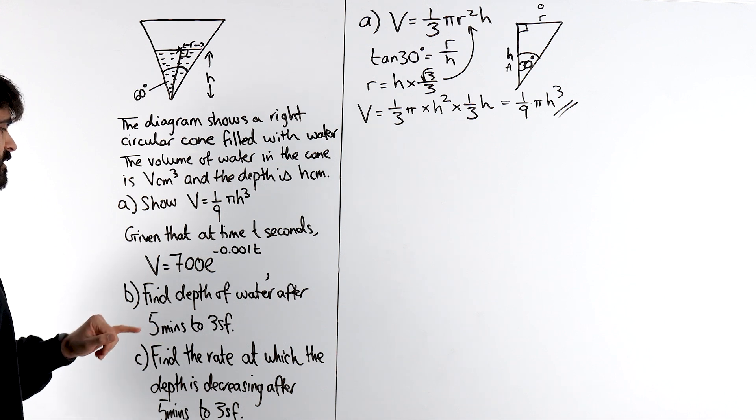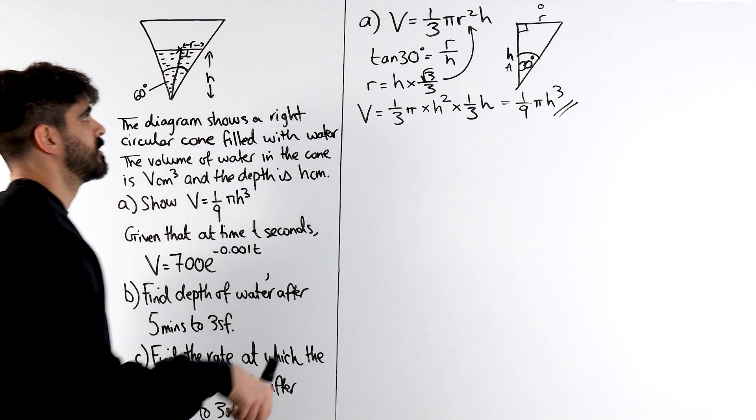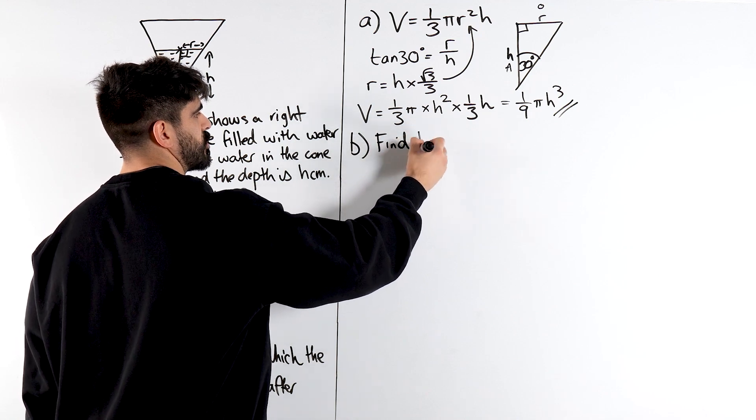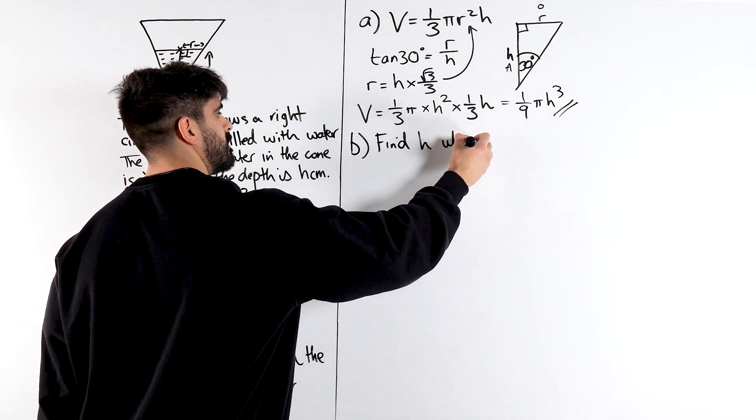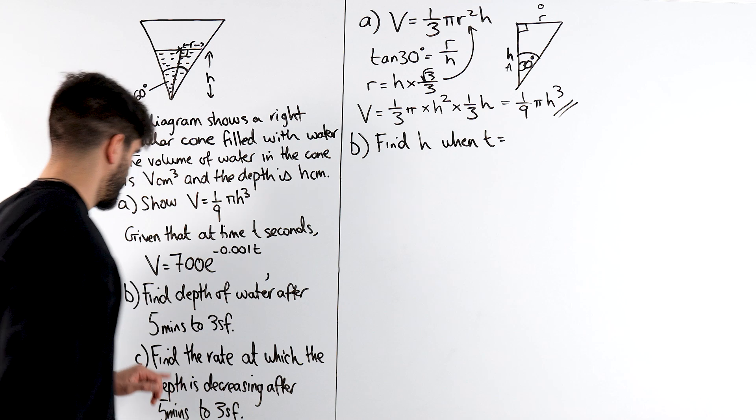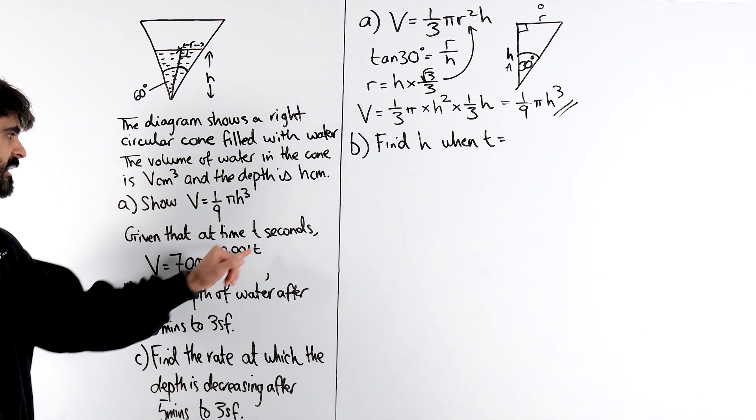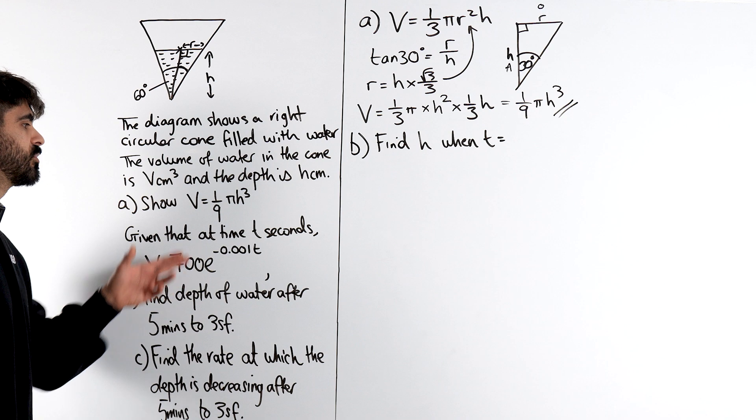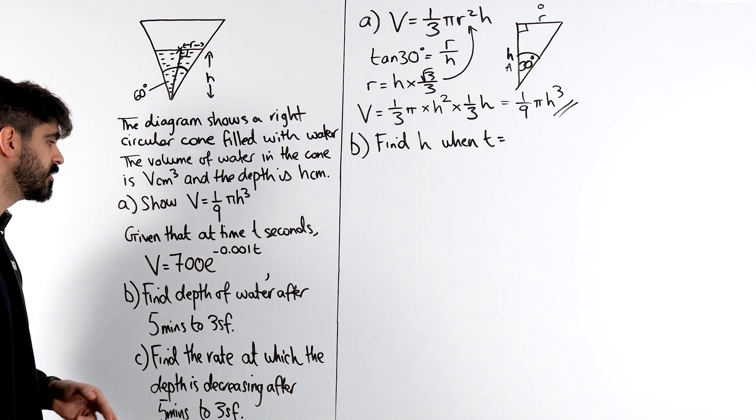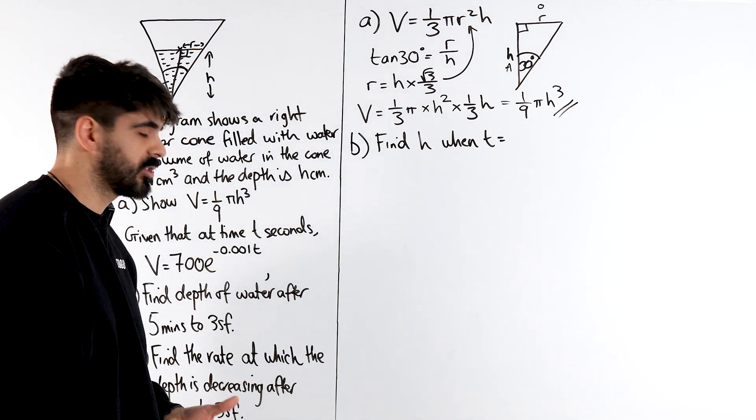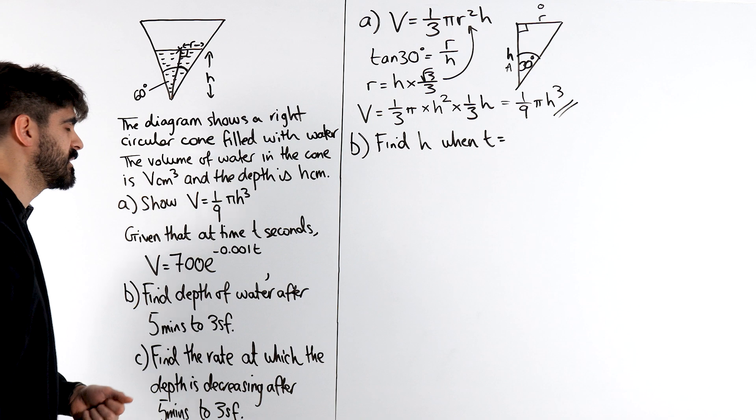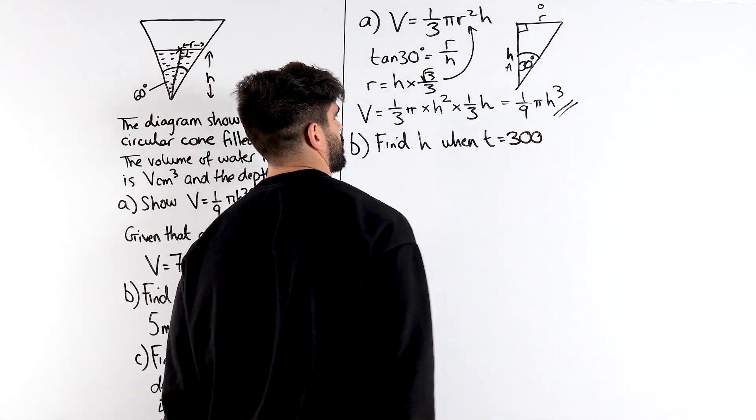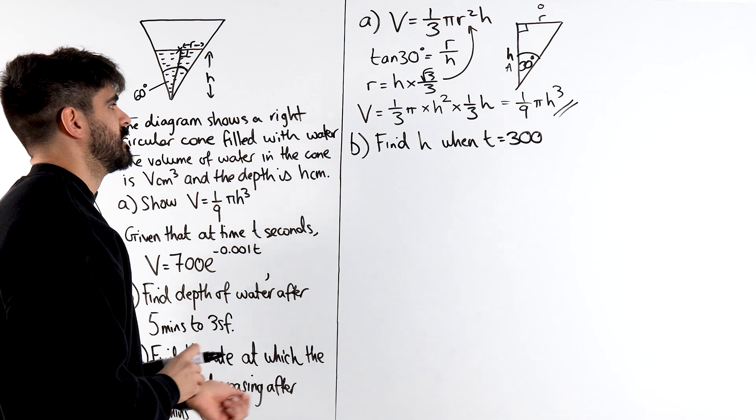So, they want you to find the depth of water, which is h. So let's write this down. They want us to find h. This gives us more direction. Find h when t is what? 5 minutes. We have to be careful because they want seconds. So, it's another thing that students make mistakes with. They don't compare. And examiners, they love to do this. They just want to test how meticulous you are. So, 5 minutes means t is 300 seconds.